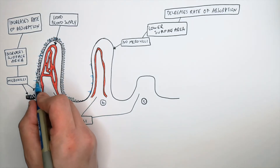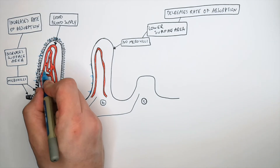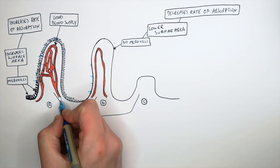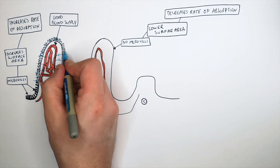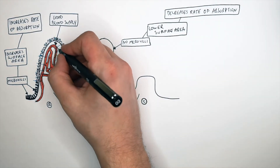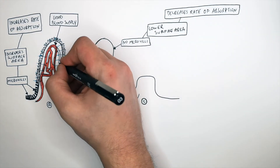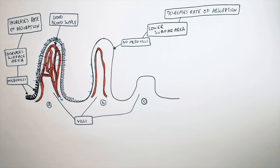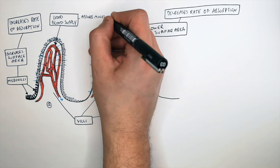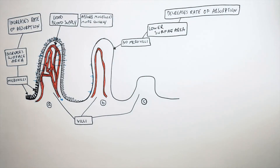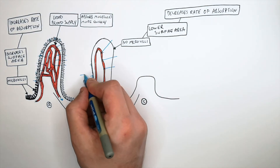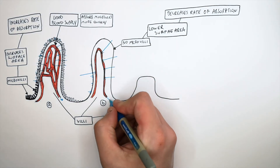A good blood supply is to increase the volume of molecules absorbed from the other side of the villi membrane. The larger the blood supply, the more molecules can be absorbed as they can carry molecules away more quickly. The capillaries need to be close to the surface membrane of the villi, so that food molecules travel a shorter distance to the blood supply and can be taken to organs more quickly. Where there are fewer blood capillaries, there are fewer areas for food to be absorbed and less molecules can be carried away.